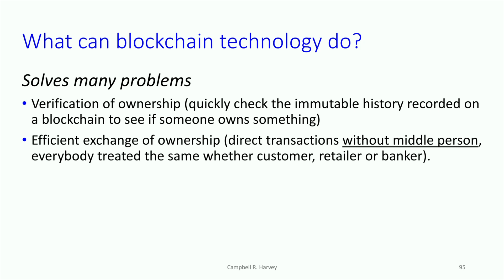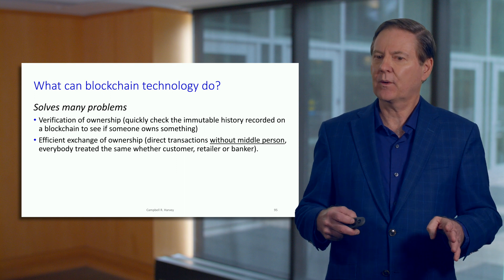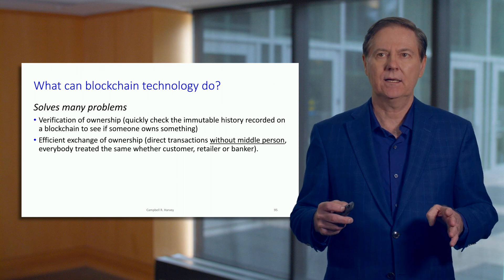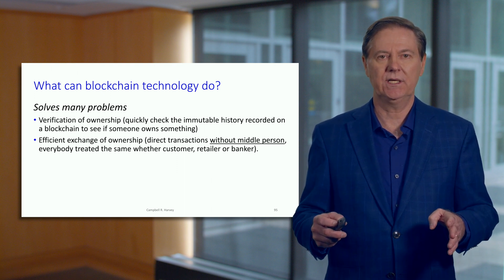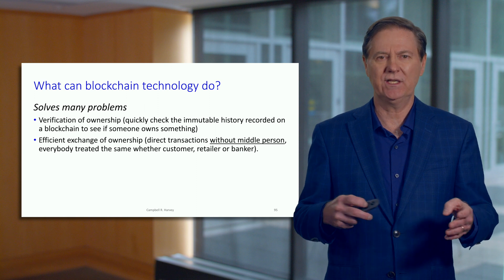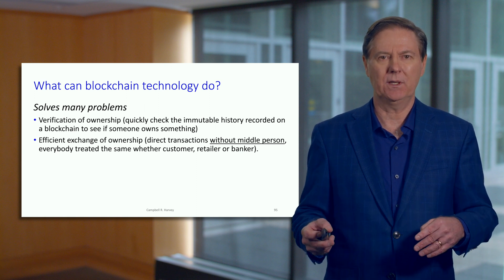Blockchain also allows for the efficient exchange of ownership — an exchange without a middle person. Or perhaps you could think of the algorithm as the middle person. But it's just allowing for a peer-to-peer transfer. It's also interesting that this technology doesn't differentiate, doesn't put labels on people.